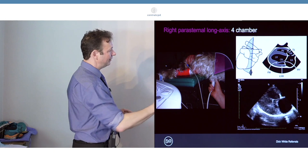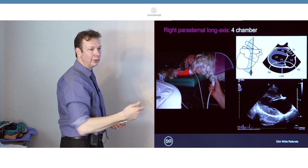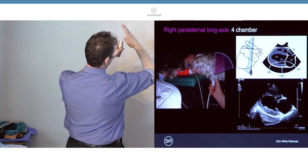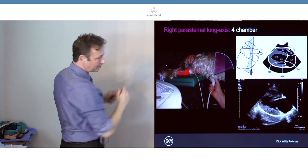If you're getting images that are very tipped or very oblique in orientation, it usually means you're not angling dorsally enough. Imagine the heart sitting like that - if you are imaging like that you'll get an oblique image. You want to turn it around more like that. So if you've got a tipped image you usually need to tip up, tip back.